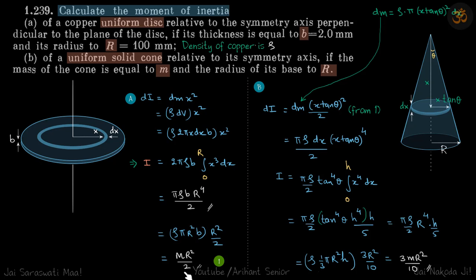Using the formula, dI = dm × r²/2 for the disc, and the radius is x tan θ, so this is dm × (x tan θ)²/2.